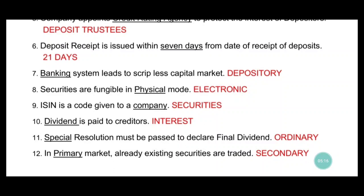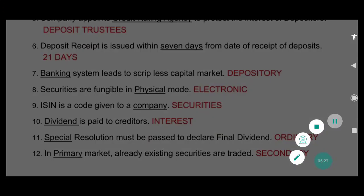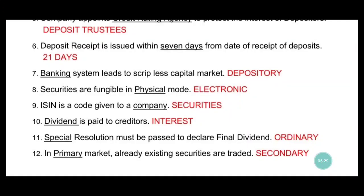Seventh: banking system leads to scriptless capital market. 'Banking system' is wrong — we have seen in chapter 9 that the depository system leads to scriptless capital market, which is a paperless trading system. Securities are held in electronic form under the depository system. So 'banking system' changes to 'depository system'.